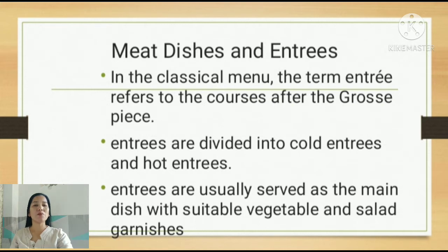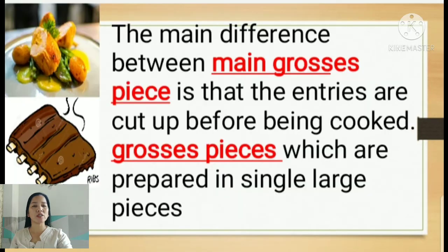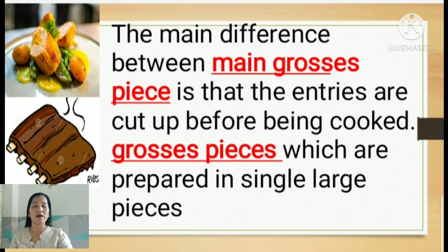In the classical menu, the term 'entrée' refers to the courses after the grossest pieces. Entrées are divided into cold entrée and hot entrée, and are usually served as the main dish with suitable vegetable and salad garnishes. The main difference is that entrées are cut up before being cooked, whereas grossest pieces are prepared in a single large piece. One good example of a grossest piece is the lechon or pork liempo — prepared in a single large piece and then cut after before they are served.